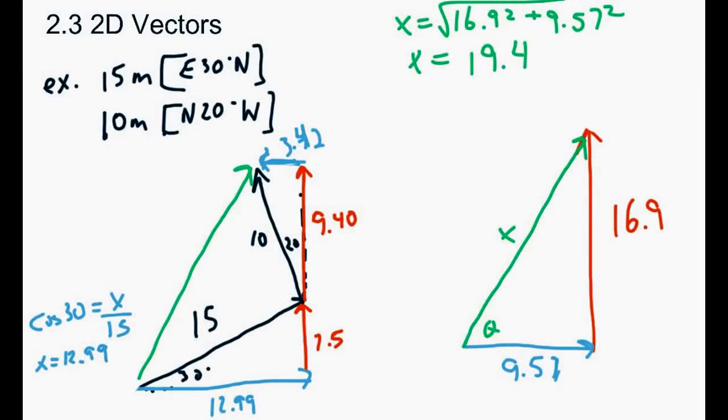And then to find the angle, we want to go opposite over adjacent to give us our tan, so that'll be 16.9 divided by 9.57. So in your calculator, when you do that, you go to 16.9 divided by 9.57, second tan that, and we get an angle of 60 degrees.